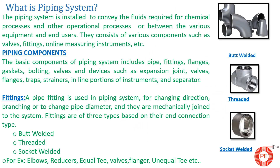What is a piping system? A piping system is generally installed in a plant to convey fluids required for chemical processes and other operational processes. Basically, a piping system is a complete network that consists of pipes, fittings, and inline measuring instruments. With this arrangement we can convey fluids and gases from one part of the plant to another.